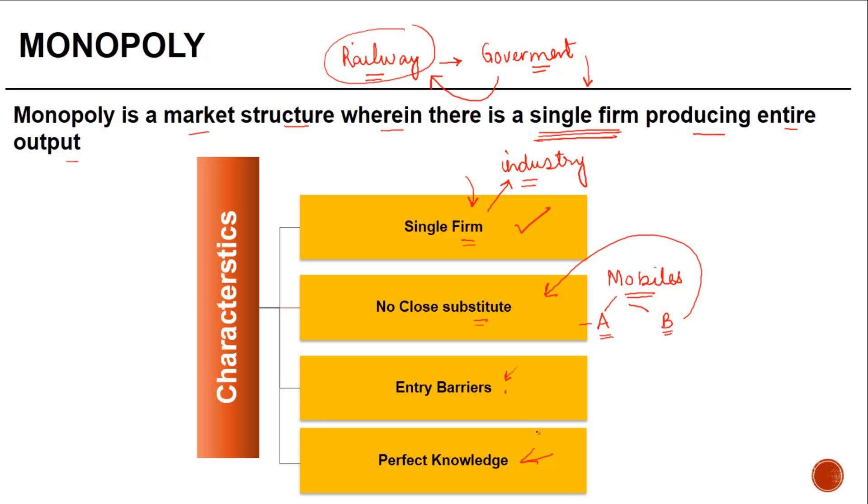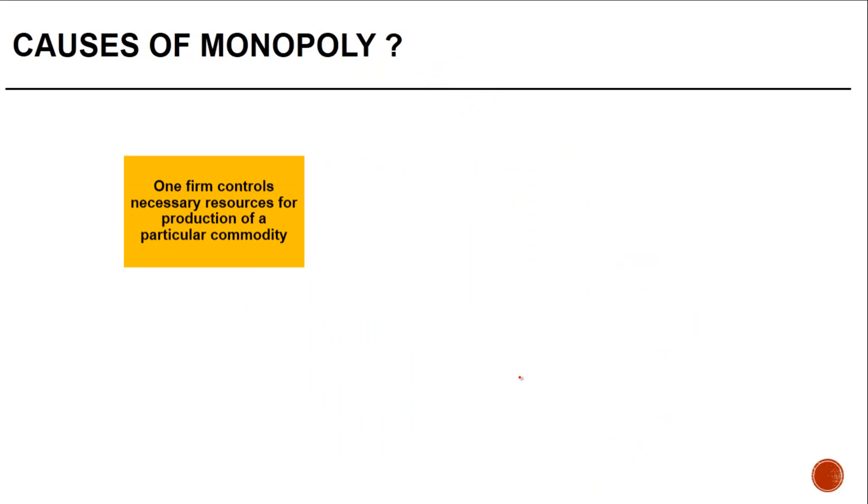Then there's perfect knowledge. It is the monopolist who has the perfect knowledge of the product such that he knows everything about the market and the product.